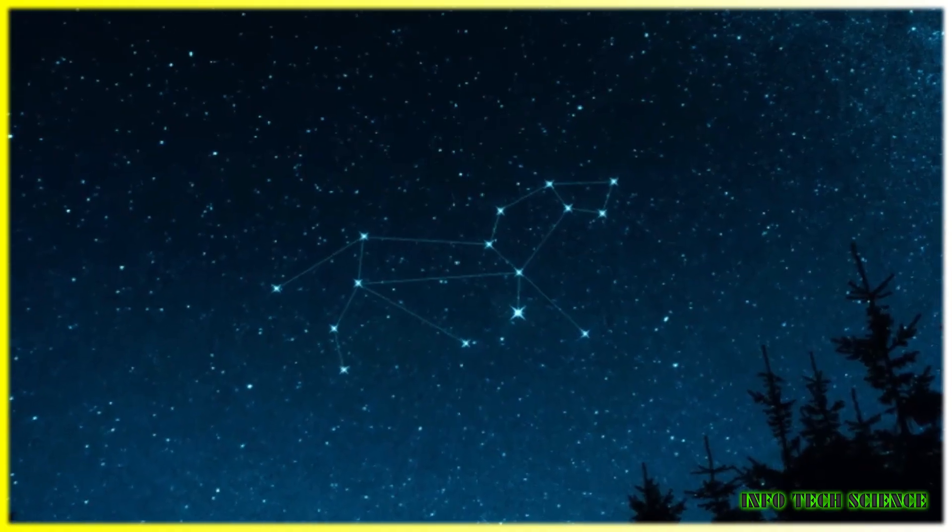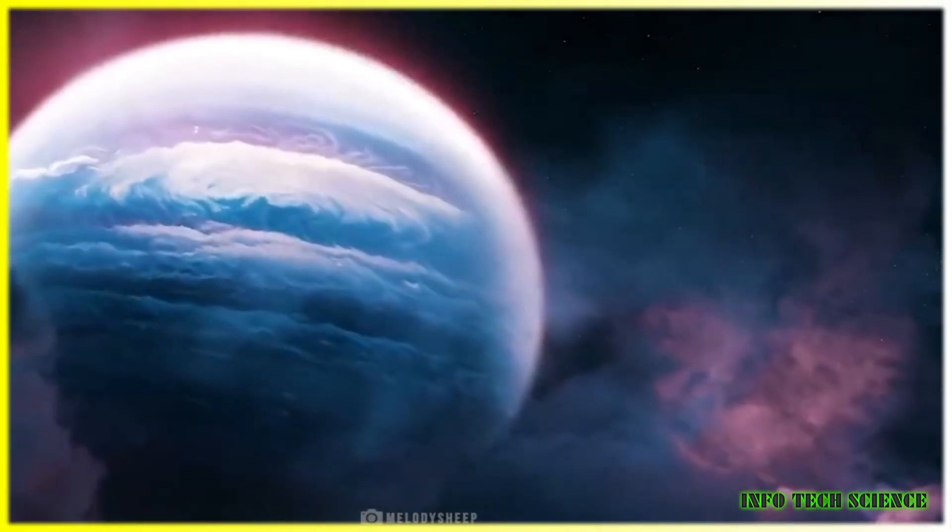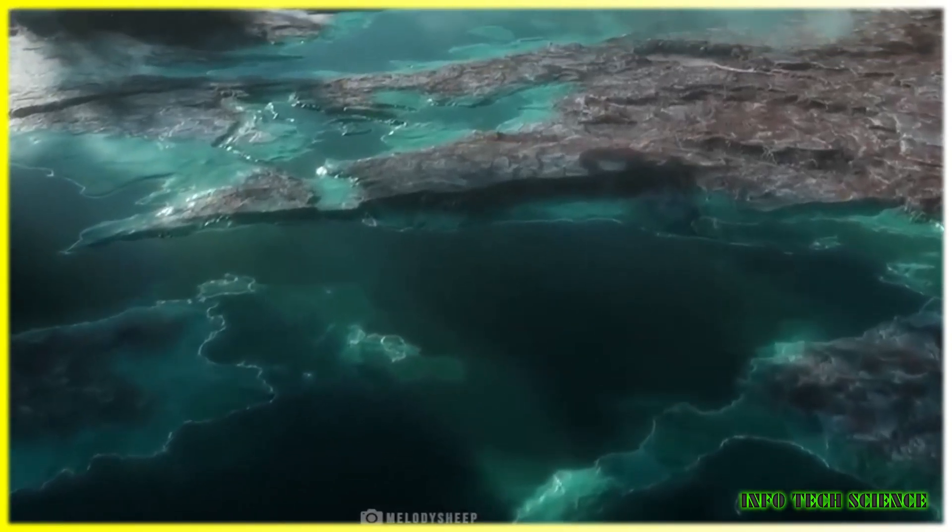Exoplanets are planets orbiting other stars which have sizes between those of Earth and Neptune, and are unlike anything in our solar system.